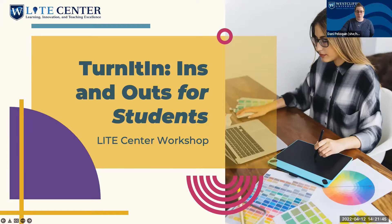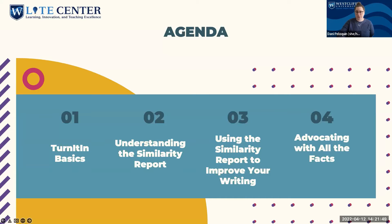Today we're going to start with going over some Turnitin basics and really situate ourselves in the purpose of what Turnitin really is. It's not a plagiarism tracker or checker, despite what some of us may think. We're also going to talk about how it can be used to get feedback from your professors and how we can use that feedback to support the development of our writing. Then we're going to spend some time understanding what the similarity report is, and how we can use it to improve our writing — identifying areas of improvement with the similarity report in hand.